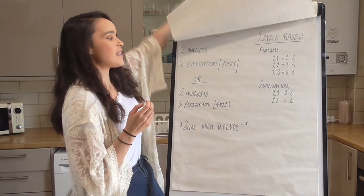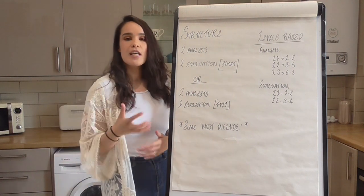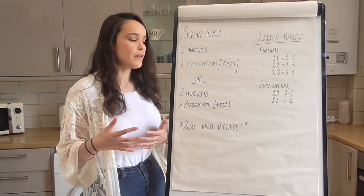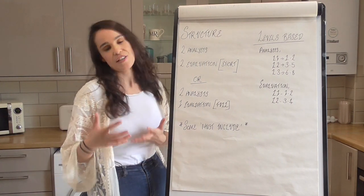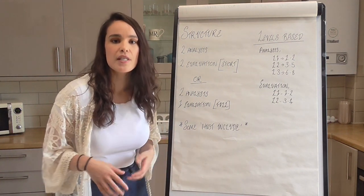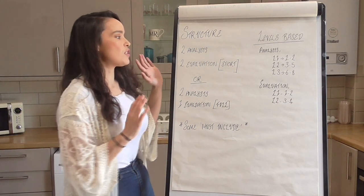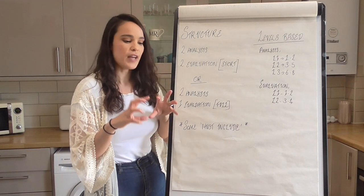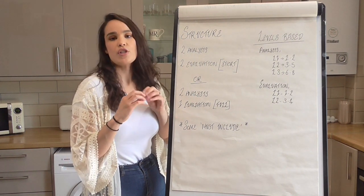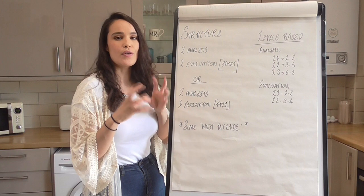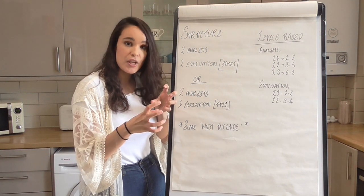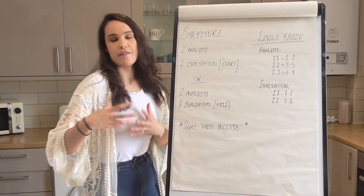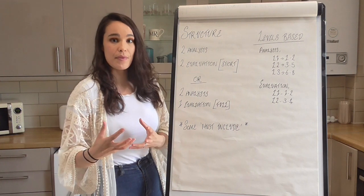The structure itself looks like this. There are two potential structures you can use and it's up to you which one you use. The first structure is two analysis points and two evaluation points - those two evaluations will be very short, just two or three sentences of sharp evaluation for each analysis point. Or you can do two analysis points and one extended evaluation that goes into a little bit more depth.